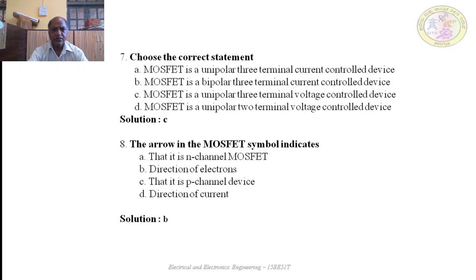Question 7: Choose the correct statement. A — MOSFET is a unipolar 3-terminal current control device; B — MOSFET is a bipolar 3-terminal current control device; C — MOSFET is a unipolar 3-terminal voltage control device; D — MOSFET is a unipolar 2-terminal voltage control device. The correct answer is C — MOSFET is a unipolar 3-terminal voltage control device.